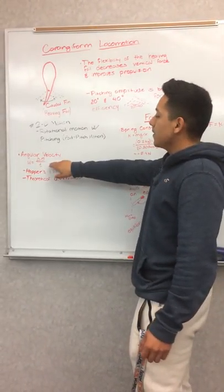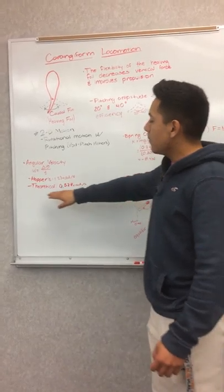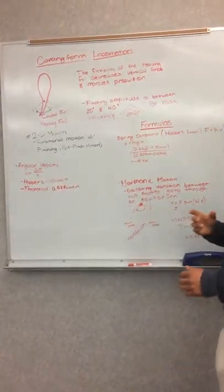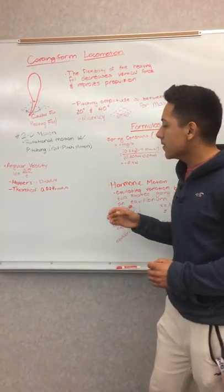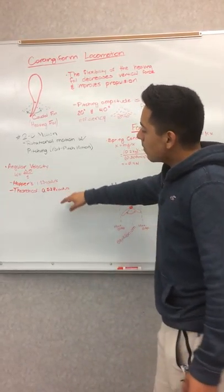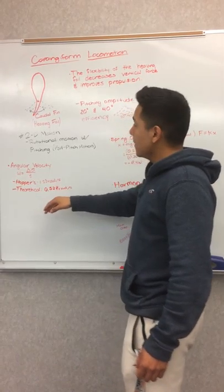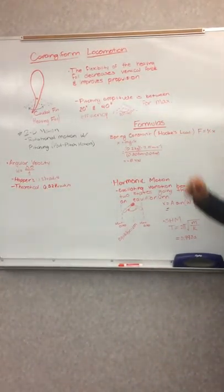With this I found the angular velocity. As you can see, I have the hoppers and the theoretical. The reason for that is my actual hopper has an amplitude of 70 degrees, while the theoretical has an amplitude of about 30, which is the maximum efficiency one.